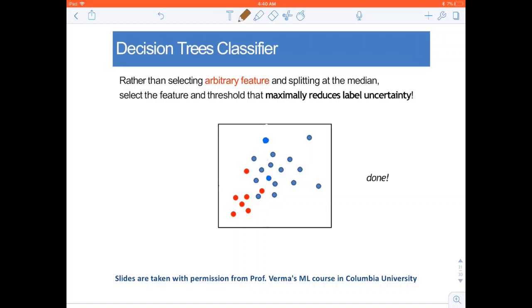Like in KD trees, rather than selecting an arbitrary feature or the feature with the maximum variance and splitting on the median, in decision tree classifier, we select the feature and the threshold that maximally reduces the label uncertainty. What do I mean by label uncertainty?